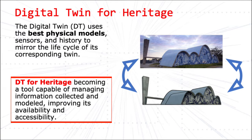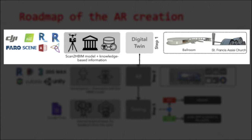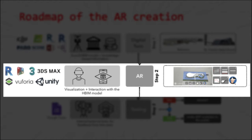The roadmap of the augmented reality creation goes all the way from the Digital Twin to the augmented reality app. The Digital Twin's creation employed terrestrial laser scanning, TLS, and a low-cost unmanned aerial vehicle, or UAV. The process was based on three fundamental steps: number one, the collection of spatial and documentary data; number two, the data processing and dense surface model creation; and number three, the HBIM modeling.